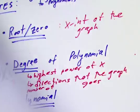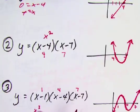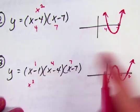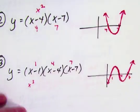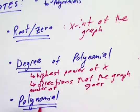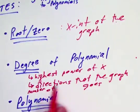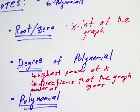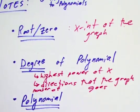So this cubic is a third degree, so it has three directions — one, two, three. The degree is the number of directions that the graph goes.